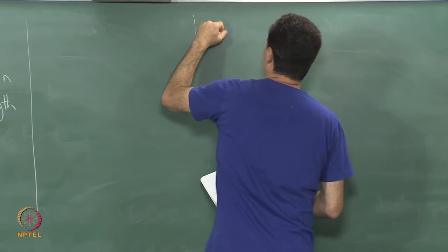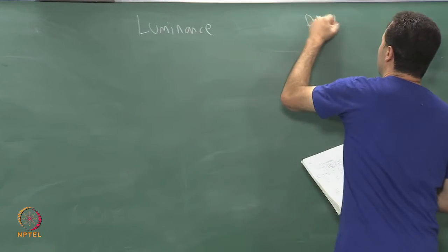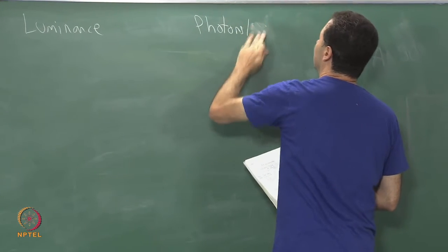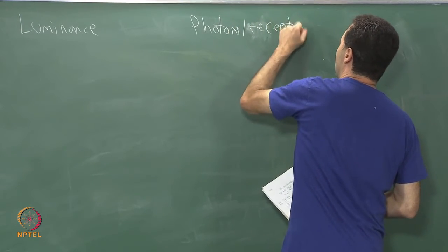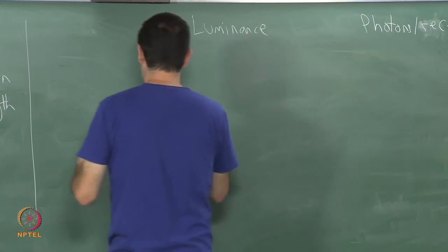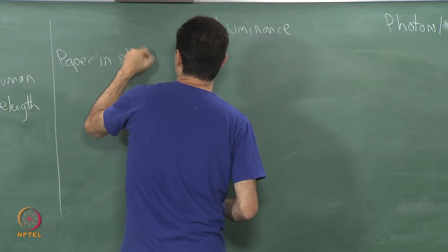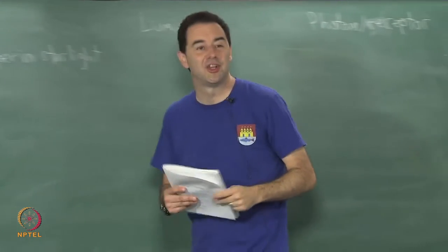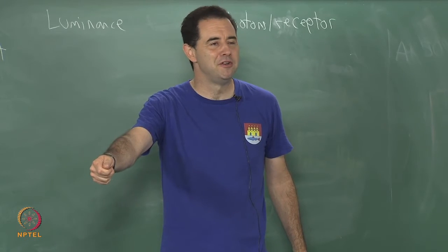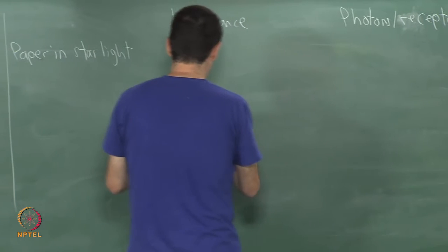Let us look at luminance and how many photons per receptor - how many photons land in a single receptor at a certain level of luminance. I will just give some cases here. Paper in starlight is the weakest. We are outside, there is no moon in the sky, there are no clouds, just stars, and you hold out a piece of paper. I assume you are not near the city or anything like that. Imagine it is very very dark, you just have a piece of paper.